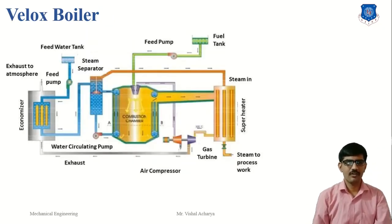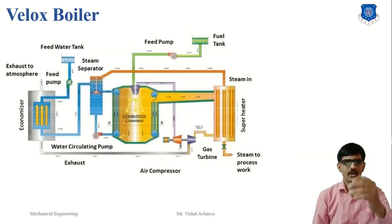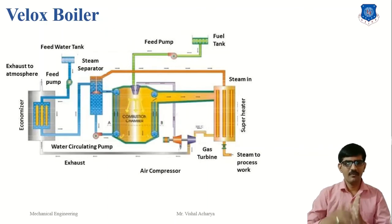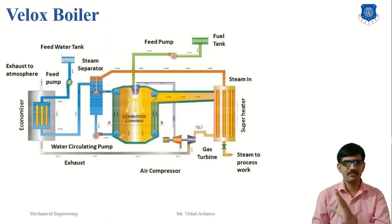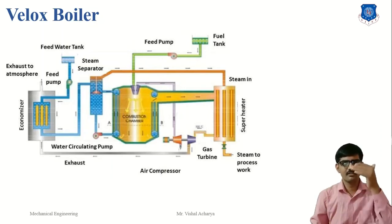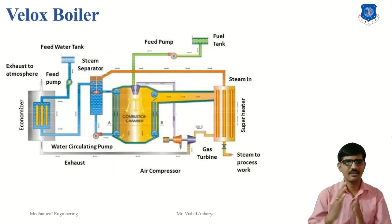We will now discuss the Velox boiler. Velox boiler is a forced circulation water tube boiler, mostly used in gas turbines. In this boiler, the velocity of fuel gases is greater than the velocity of sound, which causes more heat transfer from the gas to the water, increasing the steam generation rate. The main principle is: when the velocity of gas is greater than the speed of sound, heat transfer rate is increased. This boiler can increase the heat transfer rate and steam generation rate without increasing the size of the boiler.